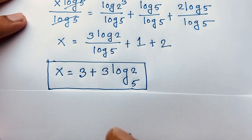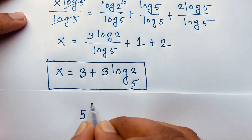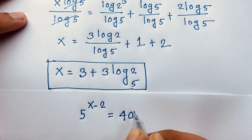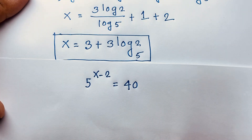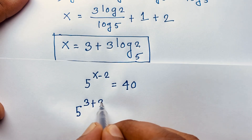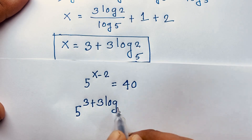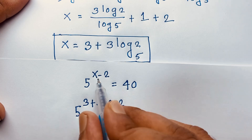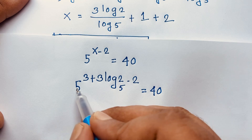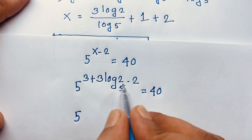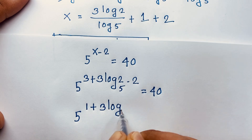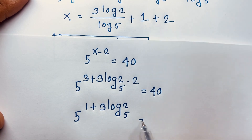Now, let's check our question. It will be 5 to the power x minus 2 is equal to 40. You can see here: 5 to the power x, where x is 3 plus 3 log 2 base 5, then negative 2 is equal to 40. You can see: 5 to the power 3 minus 2, it will be 1 plus 3 log 2 base 5, is equal to 40.